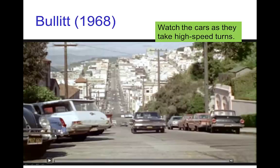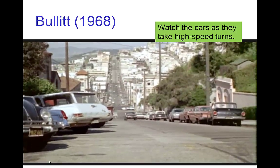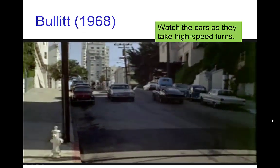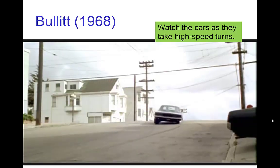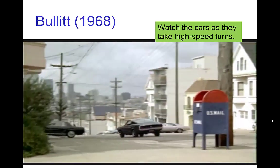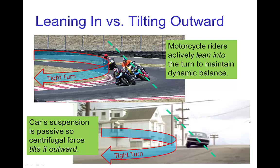Let's watch a quick scene from Bullitt and watch the cars as they make some high-speed turns. In that scene, because the car's suspension is passive, it tilts to the outside of the turn — you can think of it as being pulled by the centrifugal force. If there were motorcycles taking those turns, the motorcycle riders, in order to stay in balance, would naturally lean into the turn to maintain dynamic balance, as you see in this photo.